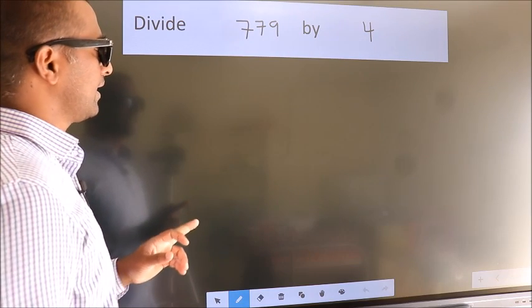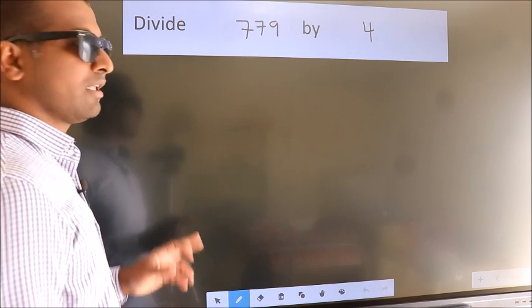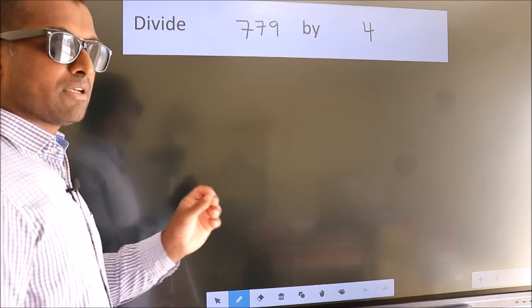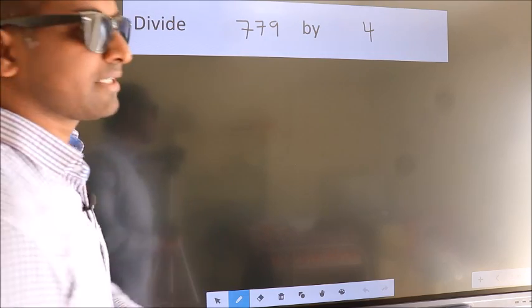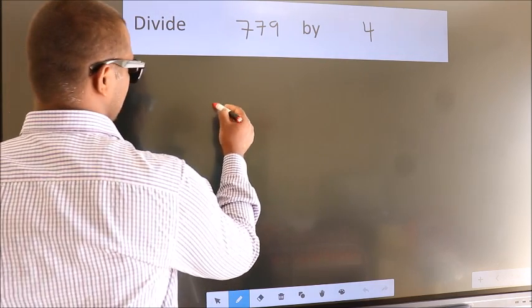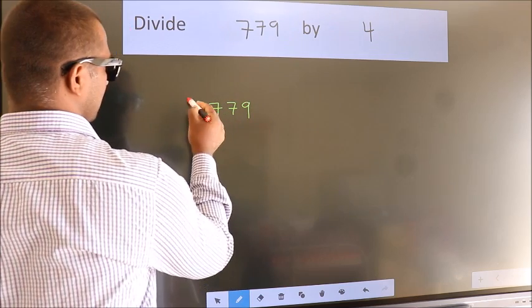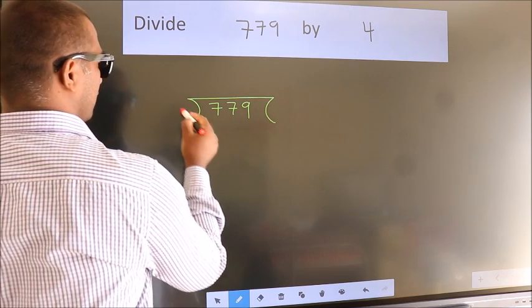Divide 779 by 4. To do this division, we should frame it in this way: 779 here, 4 here.